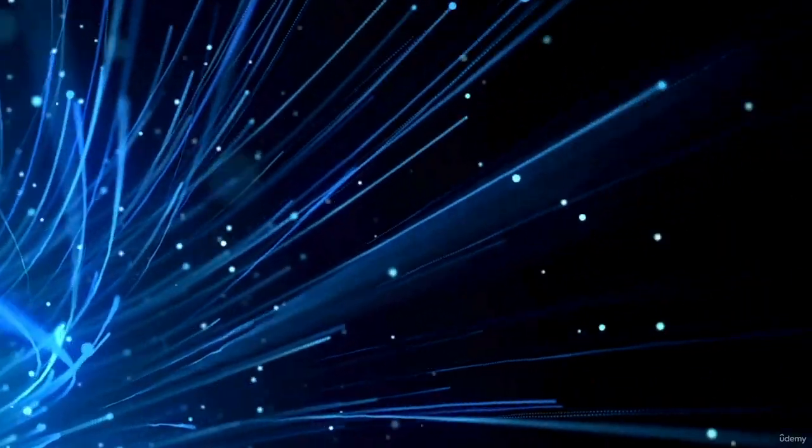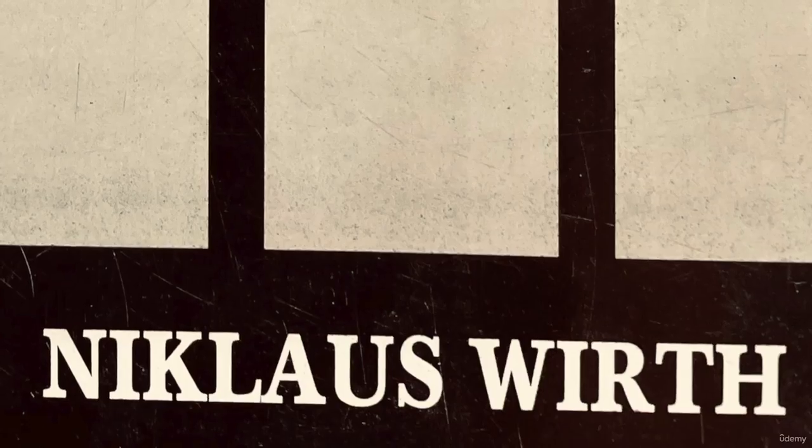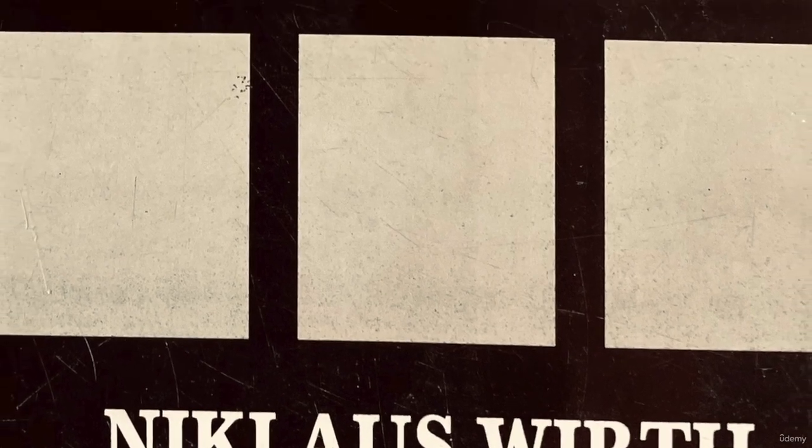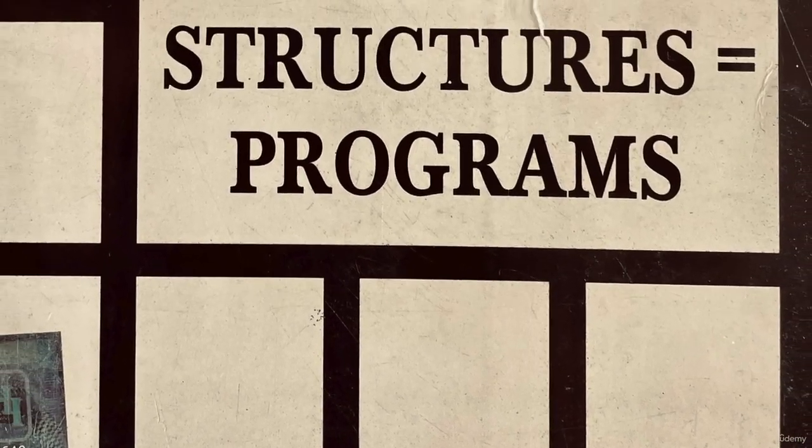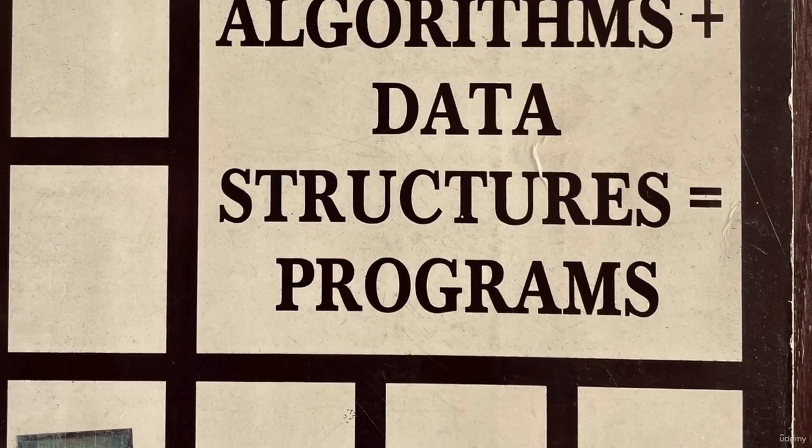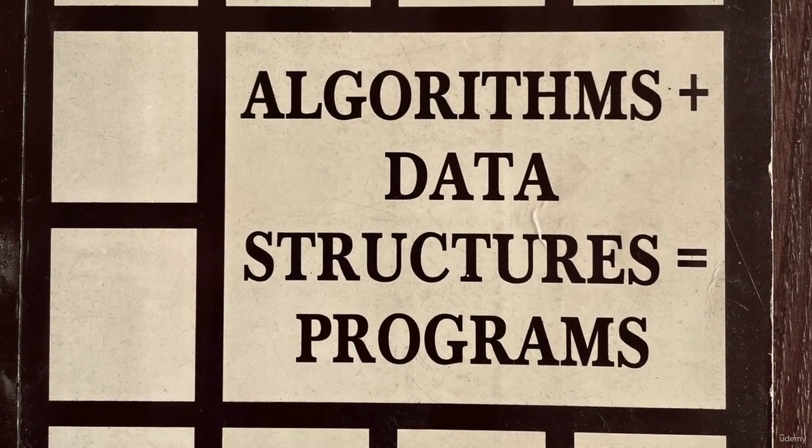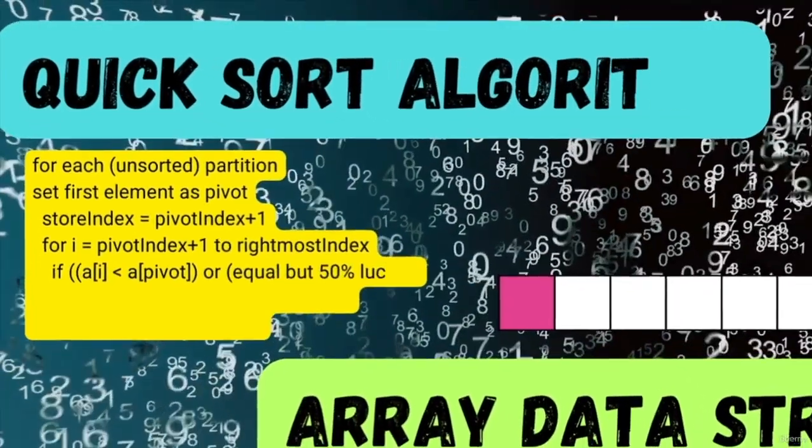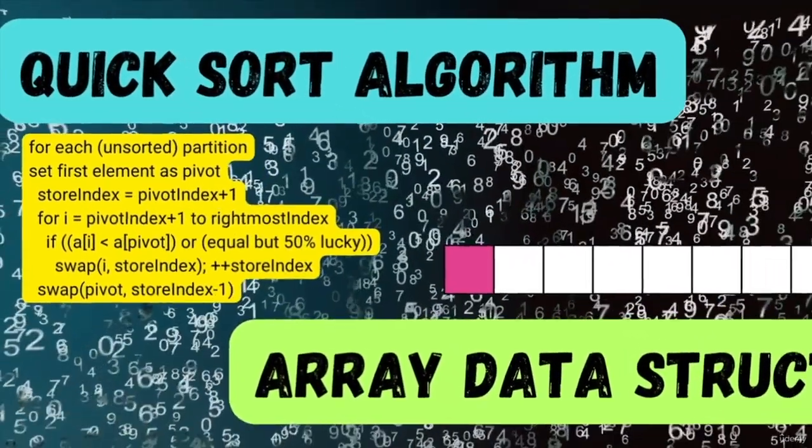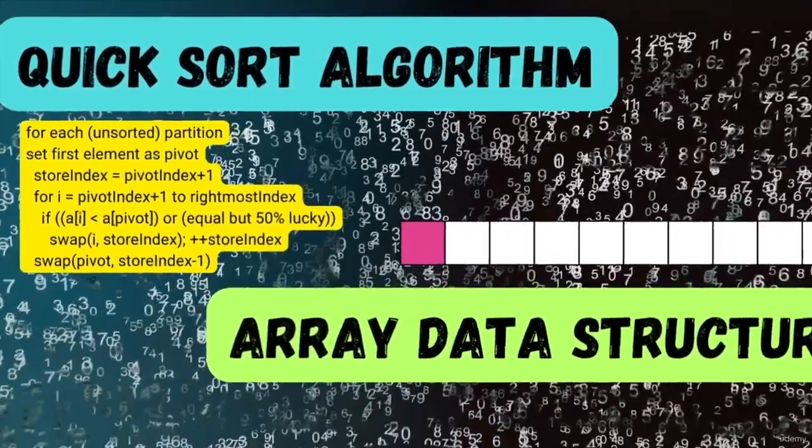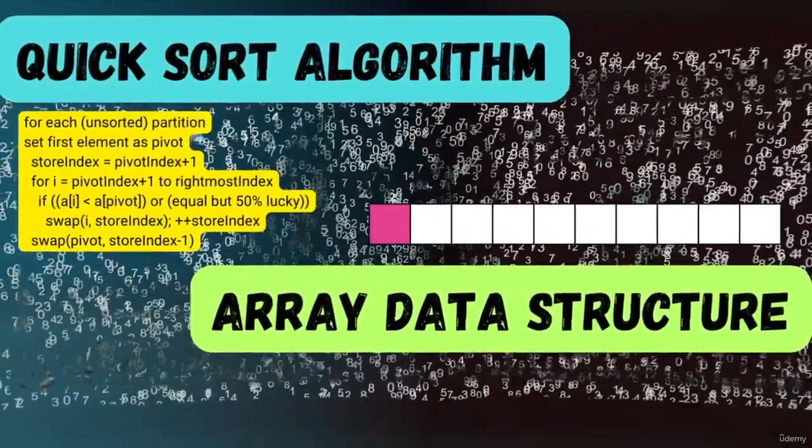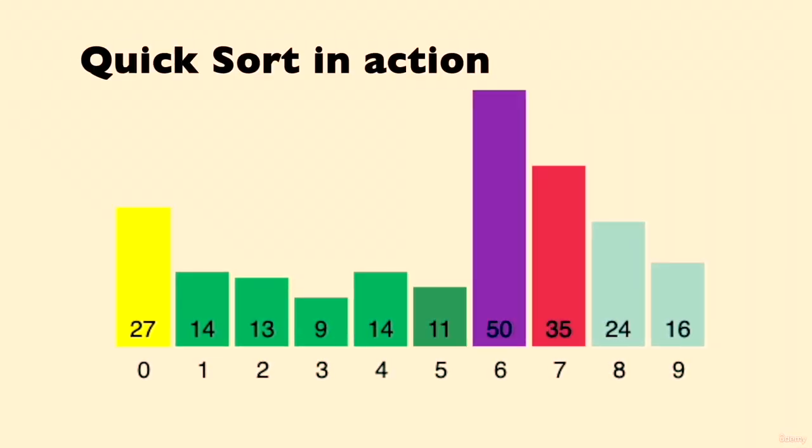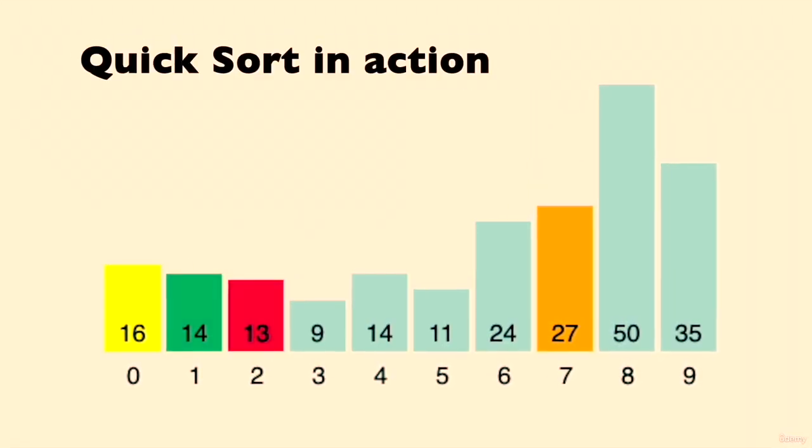What exactly are programs? They might seem like complex entities, but today we'll unveil their core components. As renowned computer scientist Niklaus Wirth aptly stated, programs are essentially a combination of two fundamental concepts: algorithms and data structures. Imagine algorithms as the recipes outlining the steps to achieve a specific task. Data structures, on the other hand, are like the ingredients—the organized way we store and manage information.